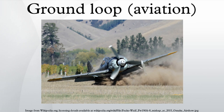Pilots may decide to execute a ground loop deliberately, usually as a last resort before hitting an immovable object, as in the case of China Airlines Flight 605 for example. In this case it may be a better option to dissipate energy by damaging the wings of the aircraft to protect the occupants seated in the fuselage.